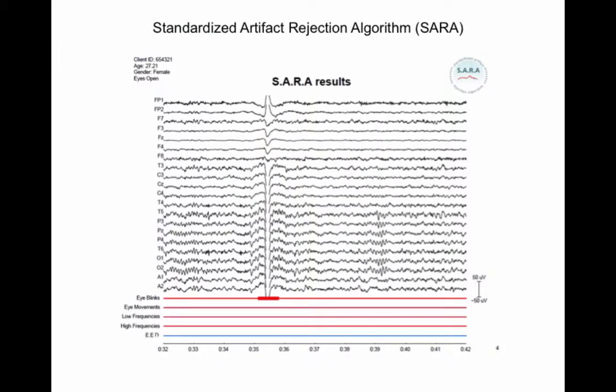This PDF shows you your raw EEG, as in this example. SARA distinguishes four artifact criteria: eye blinks, eye movements, low-frequency artifacts, and high-frequency artifacts.